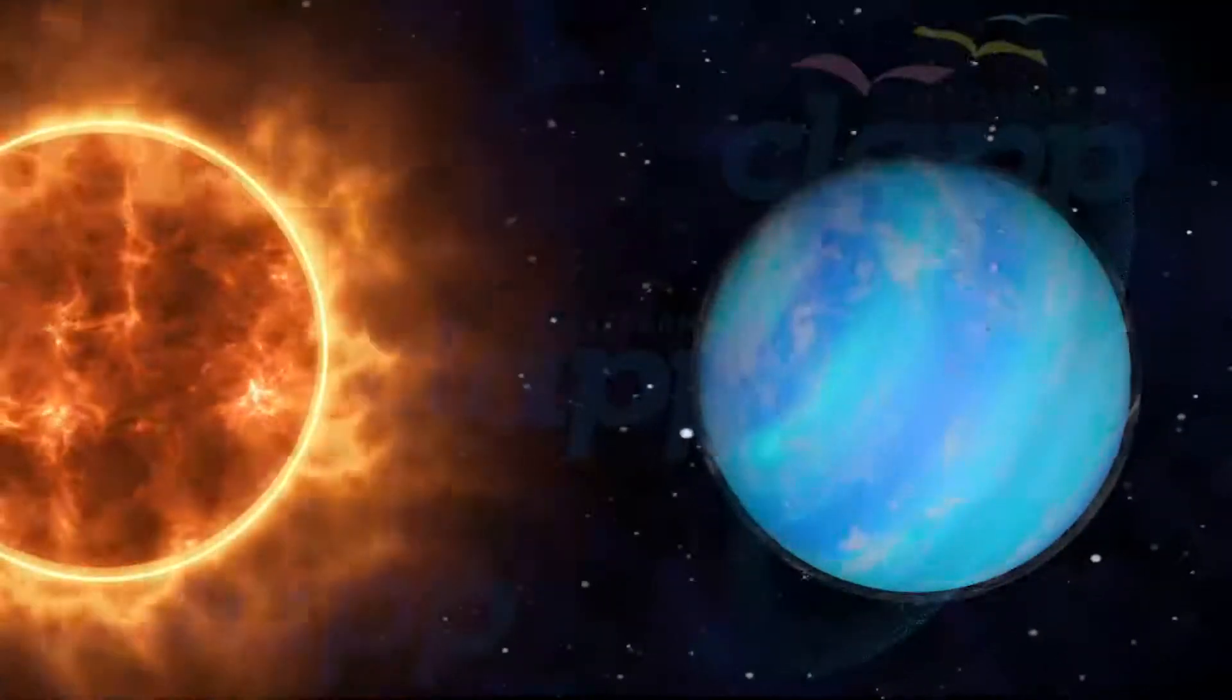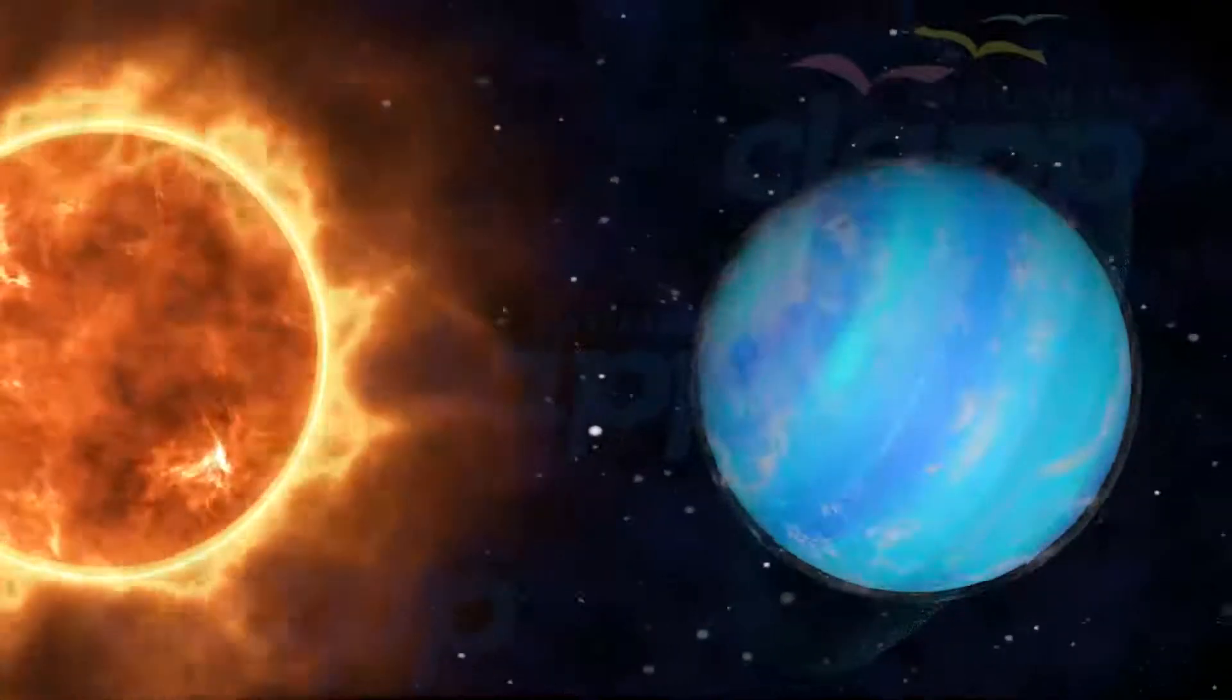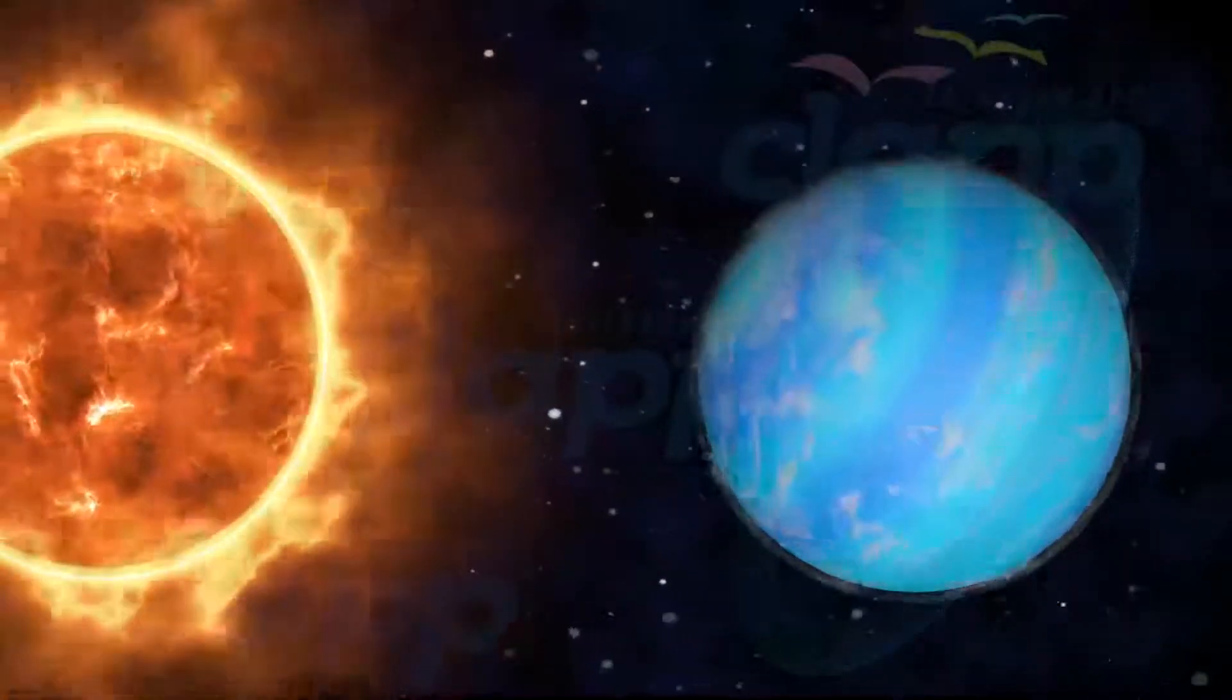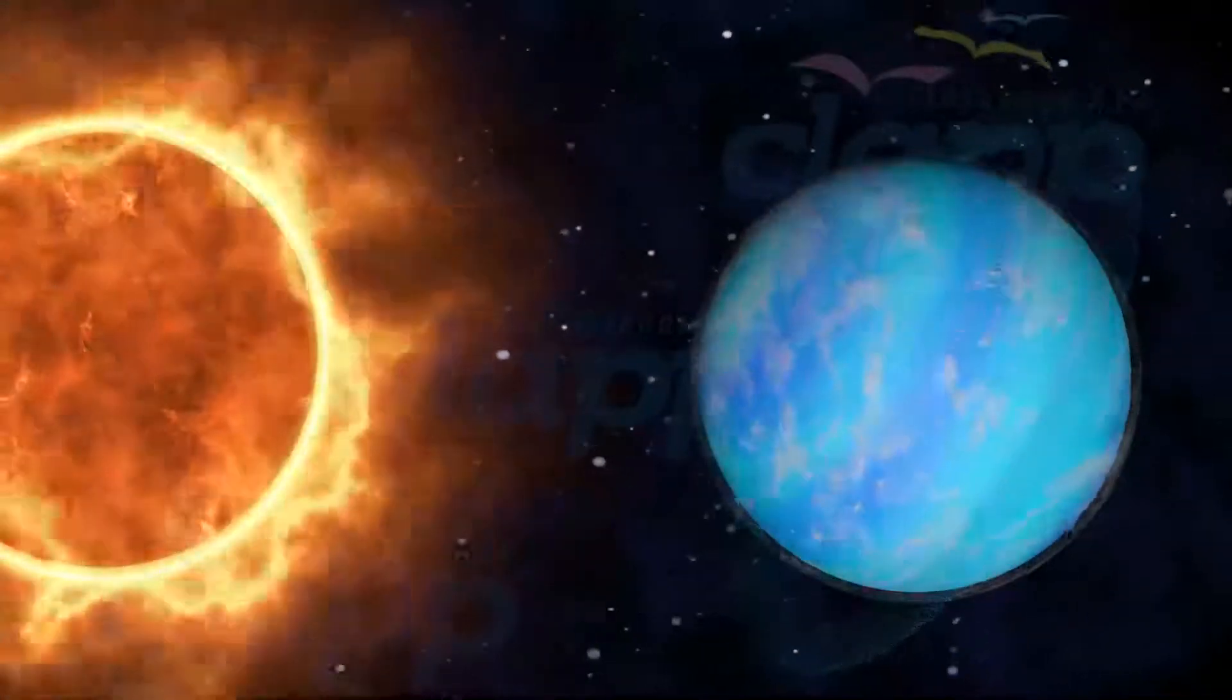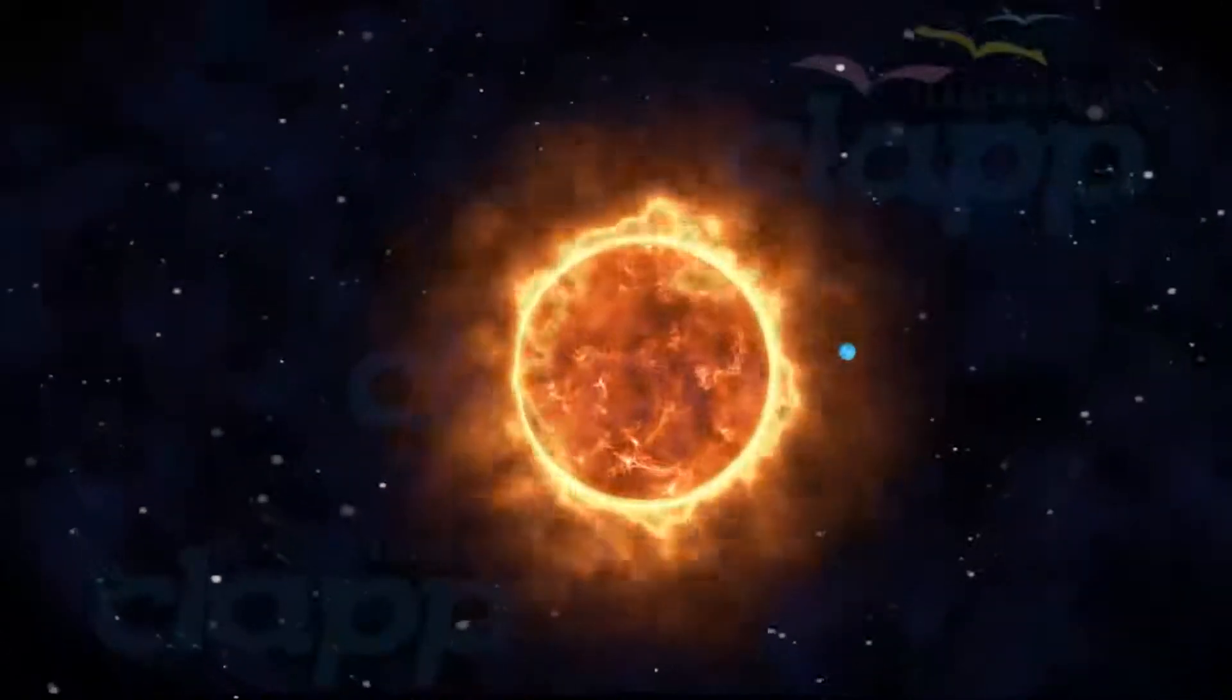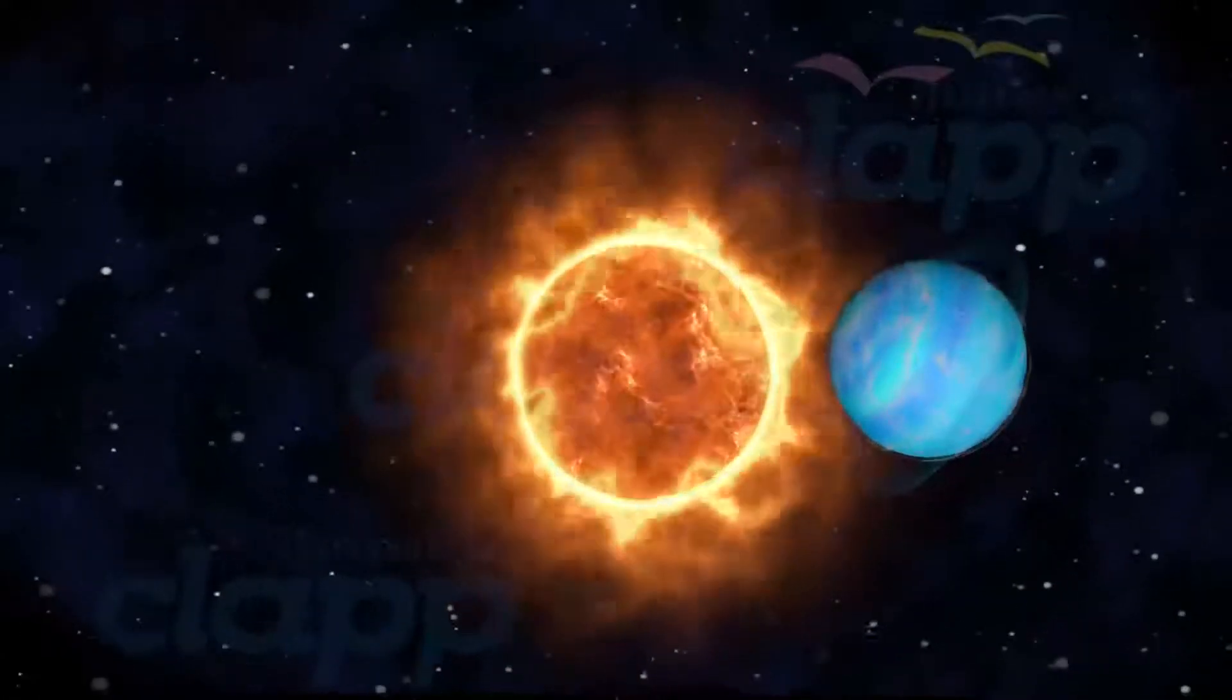Uranus takes 17 hours for one rotation on its own axis. Uranus is the largest ice giant and the third largest planet in the solar system with a diameter of 15,724 kilometers.